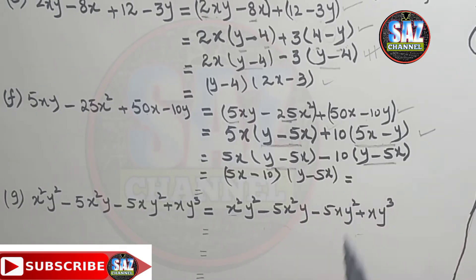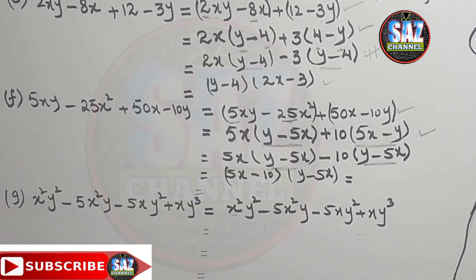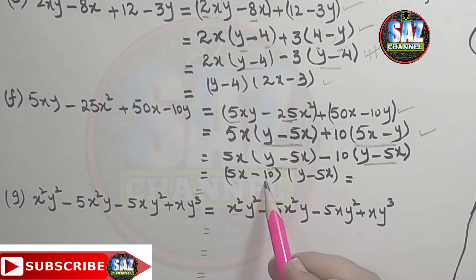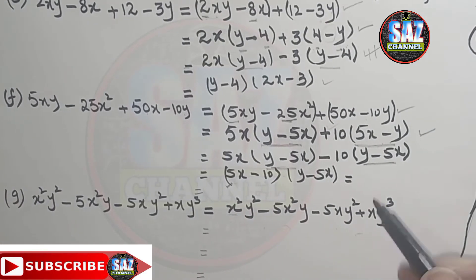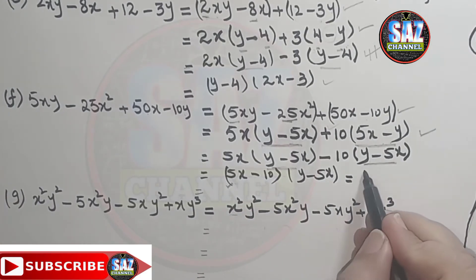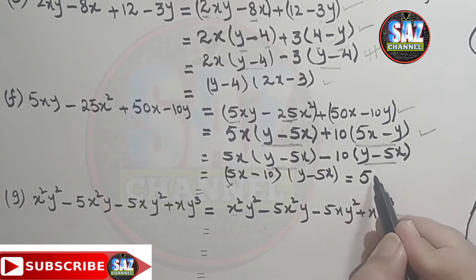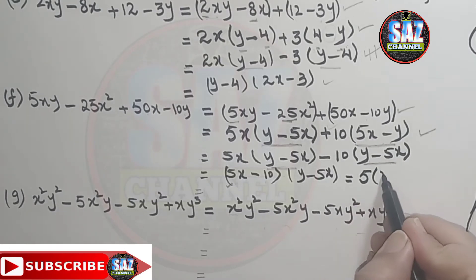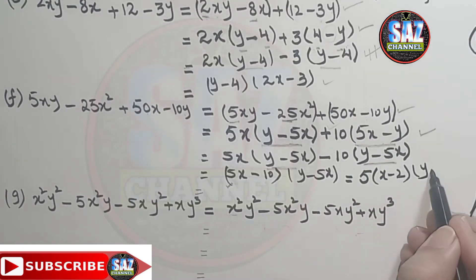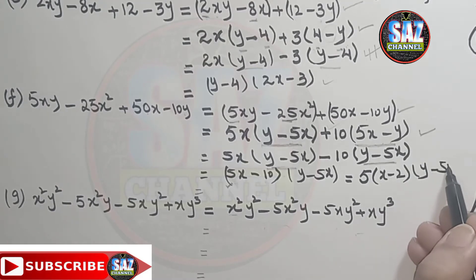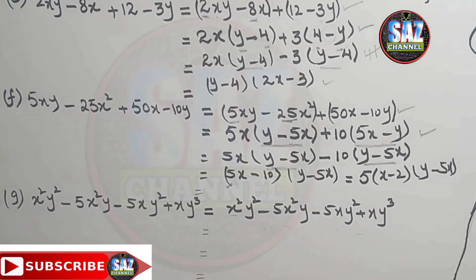We have to give our answer in a more simplified form. Looking at 5x minus 10, we can extract 5 as a common factor. So finally, the answer is 5(x minus 2) into (y minus 5x). I hope the question is clear to you.